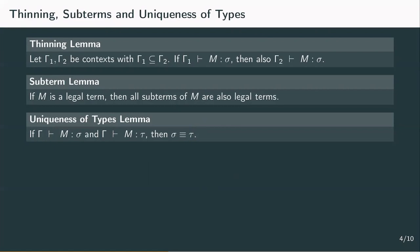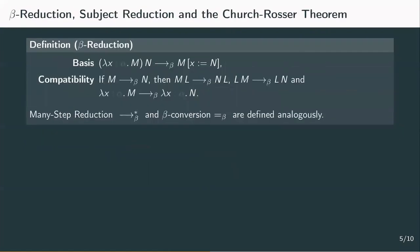So far, we've not mentioned beta reduction or beta conversion at all. This is because it works exactly in the same way as it did in the untyped lambda calculus. Simple types mainly influence which terms are legal and which are not. If we have a legal term, we don't need to consider the types when computing. We can simply ignore the type annotations that we have in the abstraction.